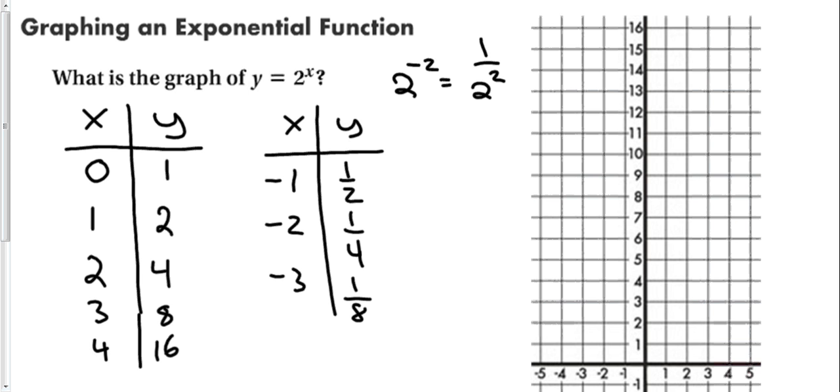Now let's graph these points. Let's start with our negatives. Negative 3 and 1/8, that's about here. Negative 2 and a quarter is about here. A half is going to be in here. And now we get to the easier ones. 0 and 1, right there. 1, 2, 2 comma 4, 3 comma 8, 4 comma 16. And now we can draw our function. So we start very low, and then it starts to go up very quickly. And that's what an exponential function looks like. Starts at the bottom very slowly and goes up very fast.